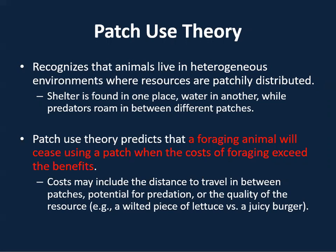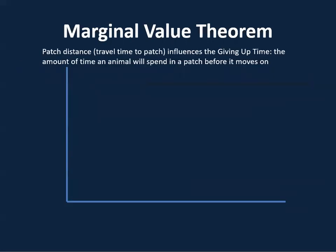The patch use theory predicts that a foraging animal will cease using a patch when the cost of foraging exceeds the benefits. Costs may include distance traveled between patches, potential for predation, or the quality of the resources gained. We can visualize this using the marginal value theorem, which looks at patch distance and its influence on giving up time — the amount of time an animal will spend in a patch before it moves on.